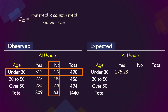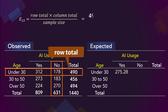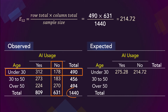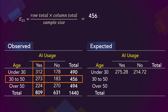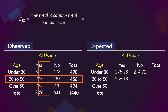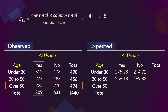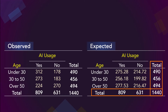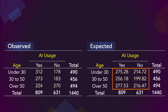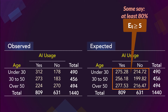For the expected value for the under-30 and no cell, the row total is 490 times 631, the column total, divided by the grand total of 1440. For row 2 column 1, we have 456 times 809 divided by 1440, which gives 256.18. We continue in that fashion for row 2 column 2, row 3 column 1, and row 3 column 2. When we compute the expected totals, note that they must equal the observed totals except for rounding errors. Each expected cell must have a value of at least 5 for the test to be valid; however, some authors only require that no more than 20% of the expected cells should be less than 5.